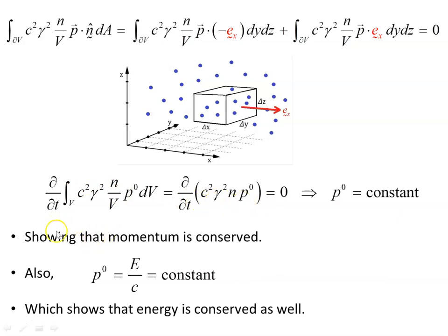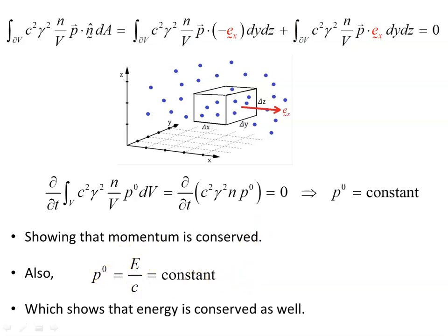We found all of this to be zero — the divergence of the momentum density over the space is zero — so the momentum density is conserved. And since P^0 equals E/c, and that is constant, the energy is also conserved. So the d/dt of all this goes to zero, confirming both momentum and energy conservation.